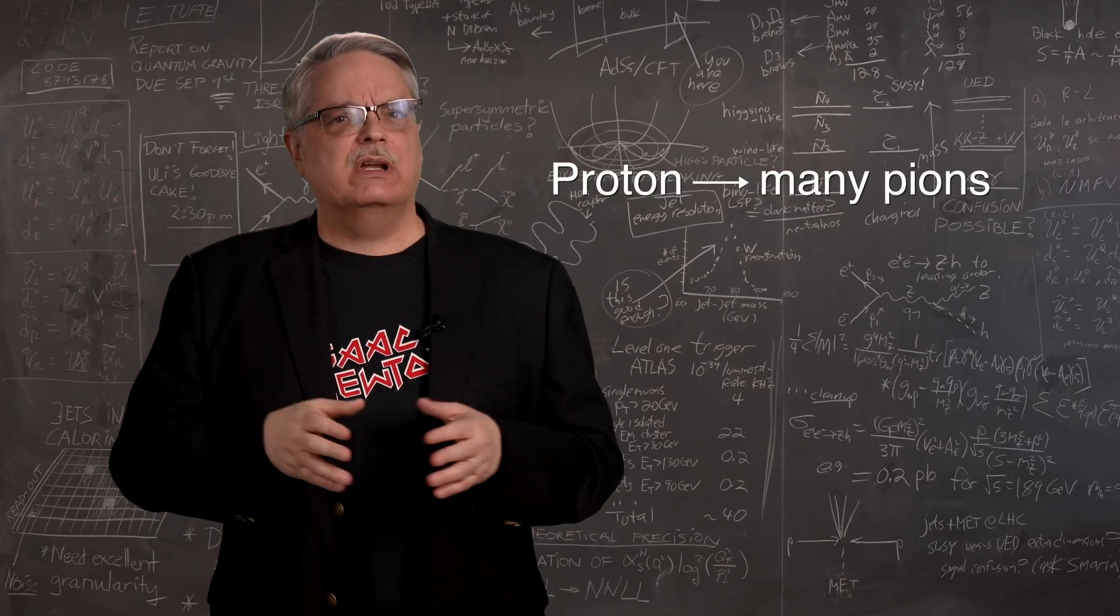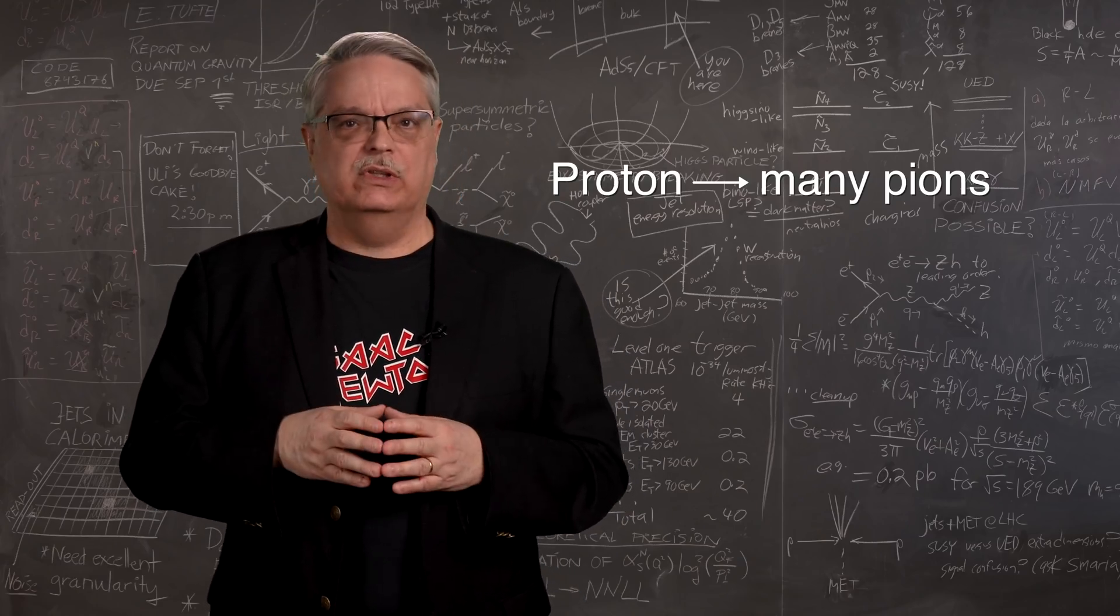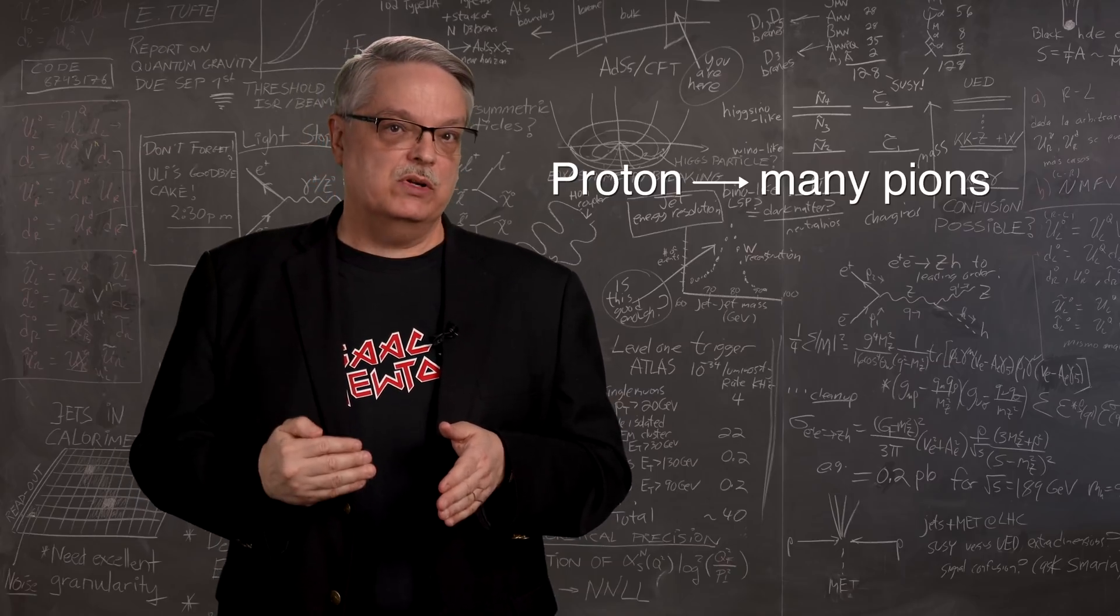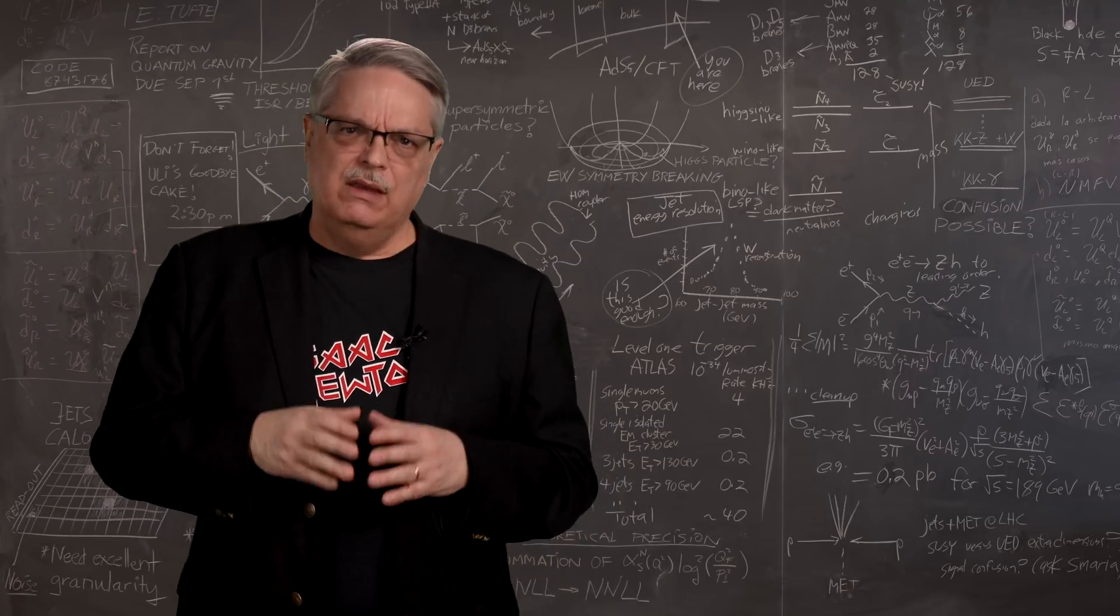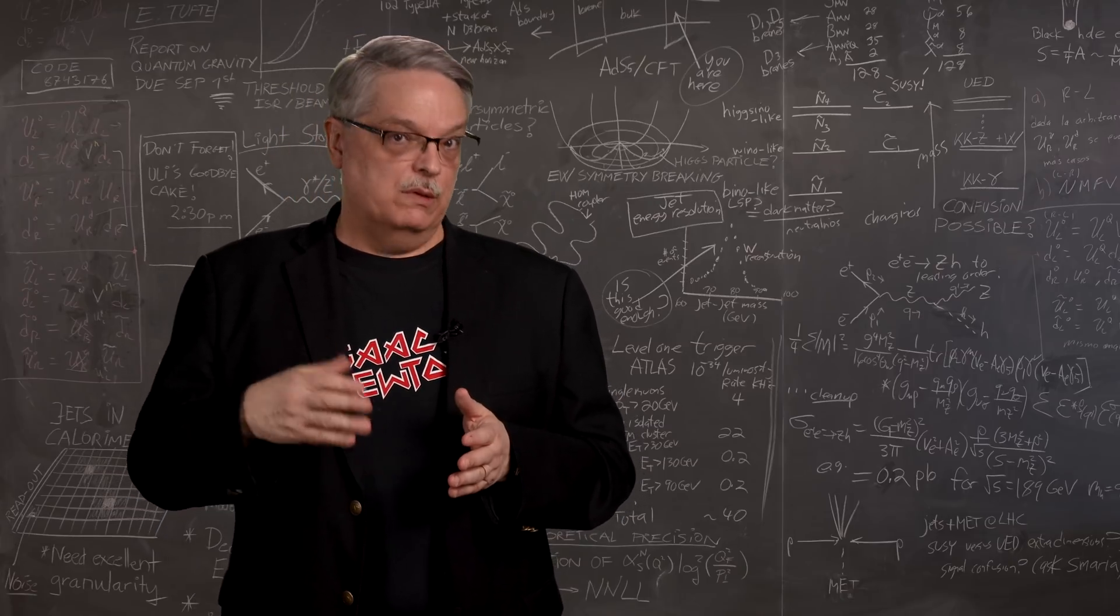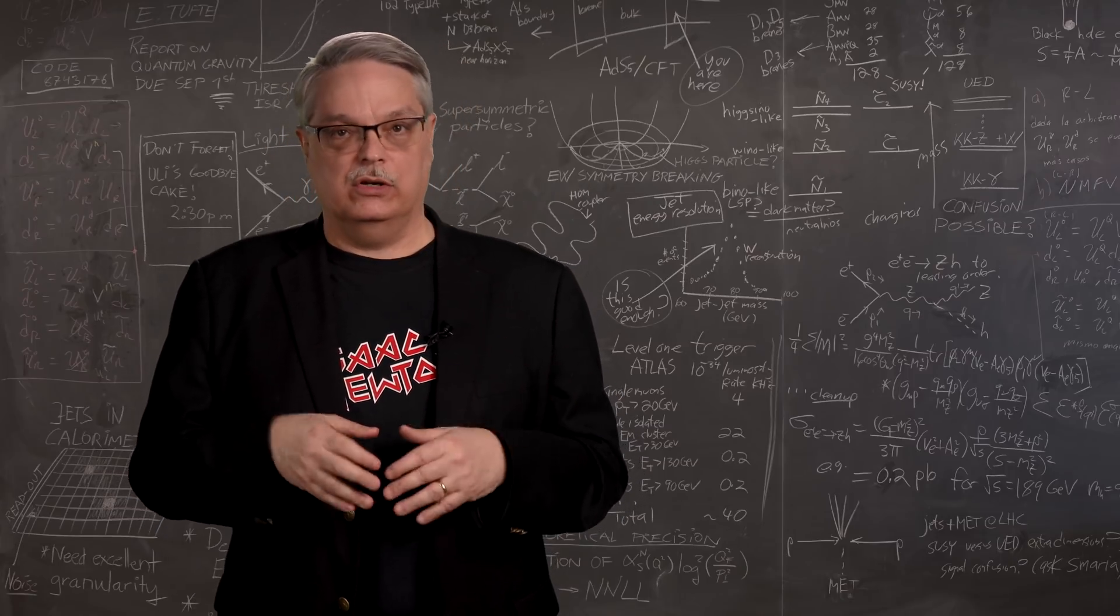There are lots of different kinds of particles that are made in these sorts of collisions. However, the most common are subatomic particles called pi mesons or just pions for short. Pions come in three varieties—positively charged, negatively charged, and neutral.